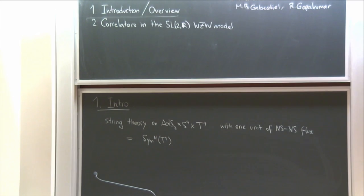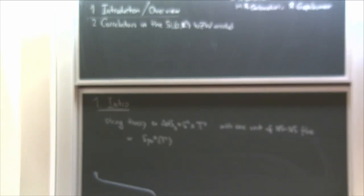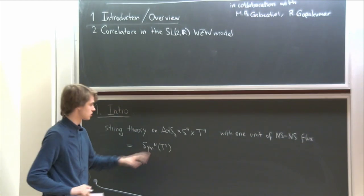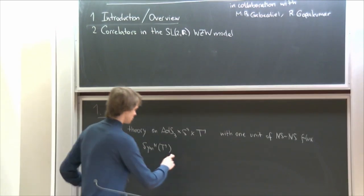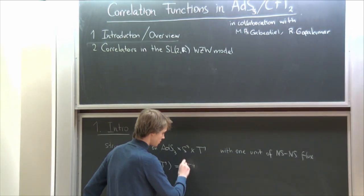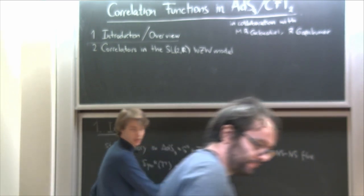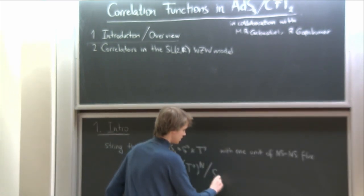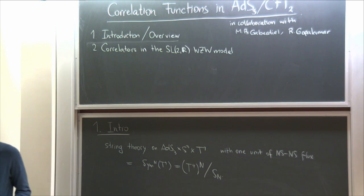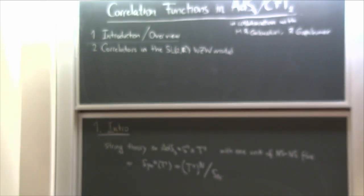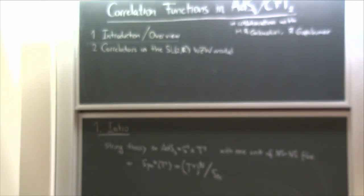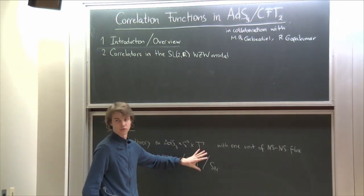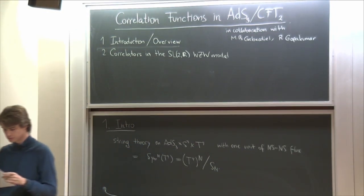On the right-hand side, by moduli space I mean marginal operators. I could deform away — the symmetric product orbifold, by which I mean N copies of the four-torus as target space divided out by the symmetric group. The twisted sector of that orbifold has a marginal operator, and I can deform by that operator to go away from the symmetric product orbifold point.